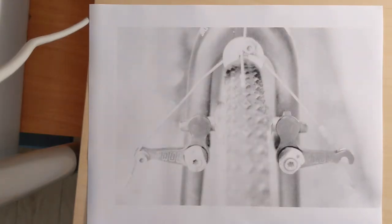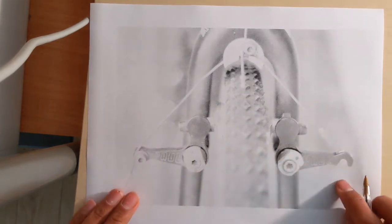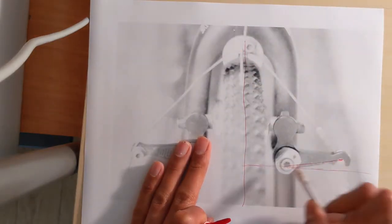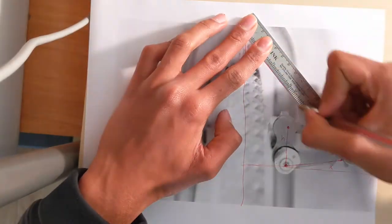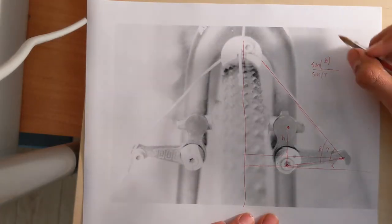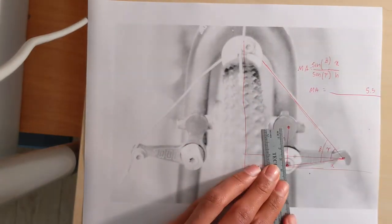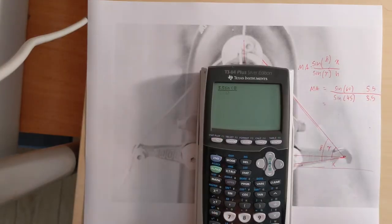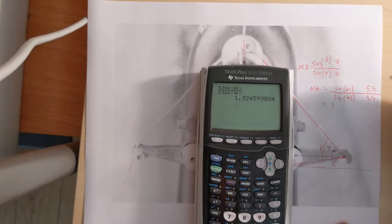Now let's throw in some rough measurements to calculate the mechanical advantage of these Paul Neo Retro wide profile cantilever brakes. First let's relabel all our variables. Now we're going to rewrite our equation for mechanical advantage. Now I'm just going to measure x, h, gamma and beta based on this picture and write down the values. The mechanical advantage of 1.92.